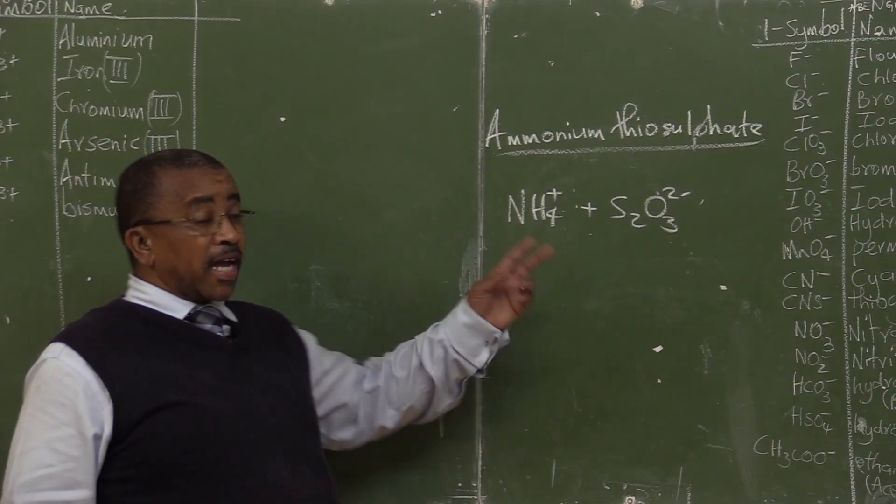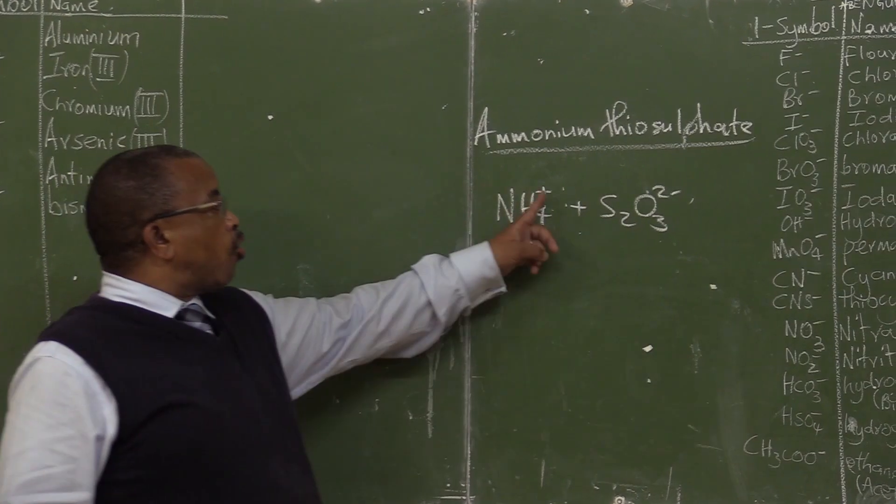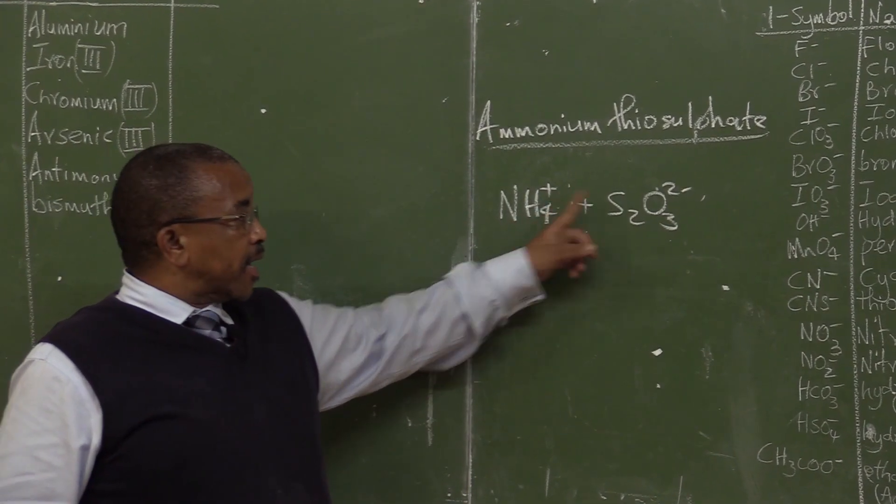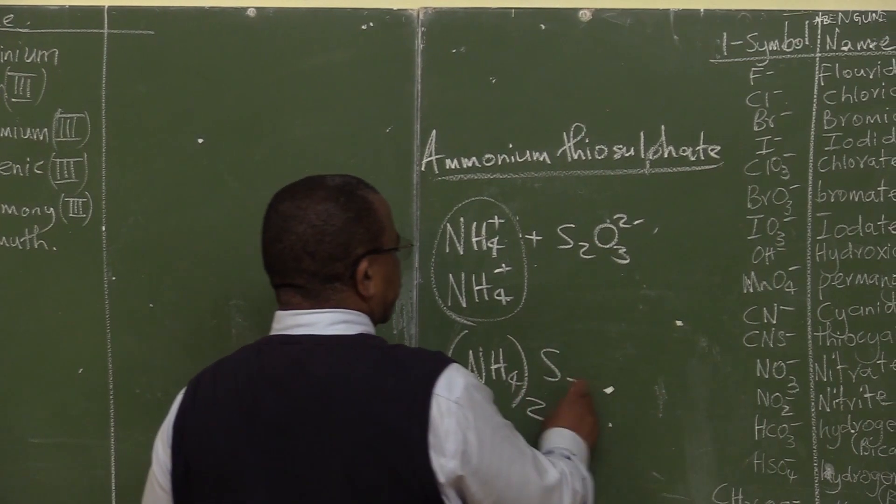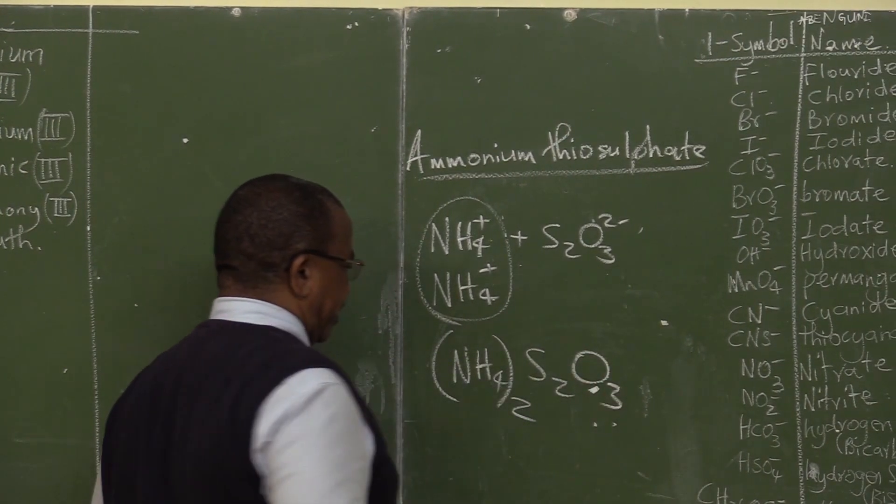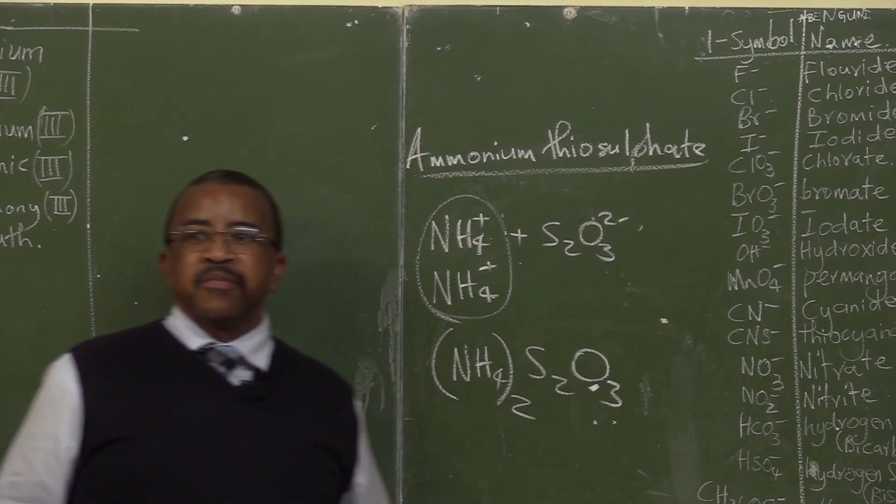Now, abo ammonium kutingega ababili. Why? Ngova, each charge u plus 1. Kandiana u minus 2. NH4, S2, O3. Hini kamalana na, ammonium sulfate.